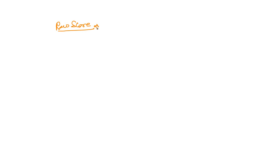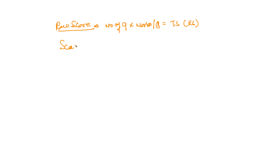To begin with raw score — I think raw score is the easy thing to understand. This is nothing but the number of questions multiplied by marks per question. That's your total score. This is your raw score.